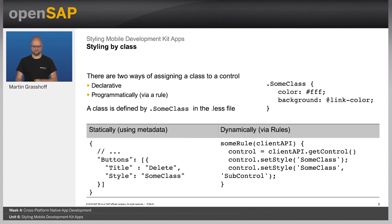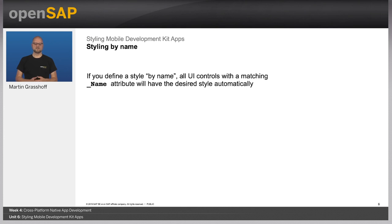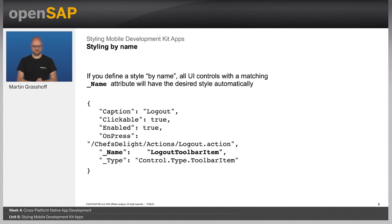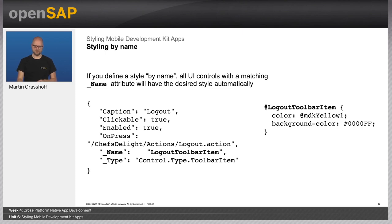This concludes Unit 4, Building Rules for MDK Applications. The next unit will be about building your Mobile Development Kit client for a mobile device. Welcome to Week 4, Unit 5. In the previous unit, I showed you how to build rules for MDK apps. In this unit, we will build an MDK client for a mobile device.